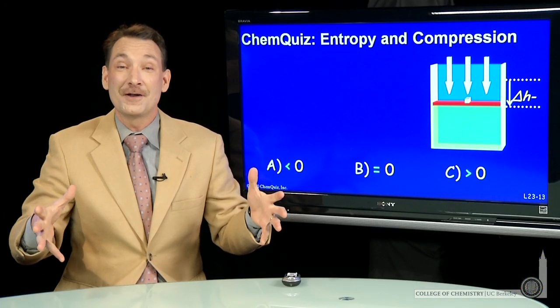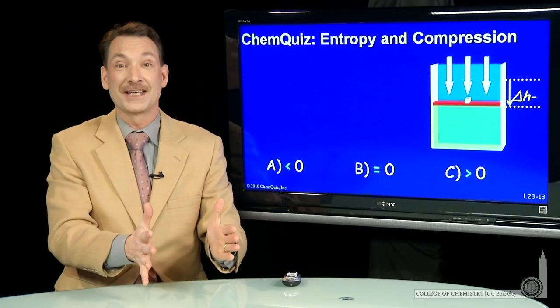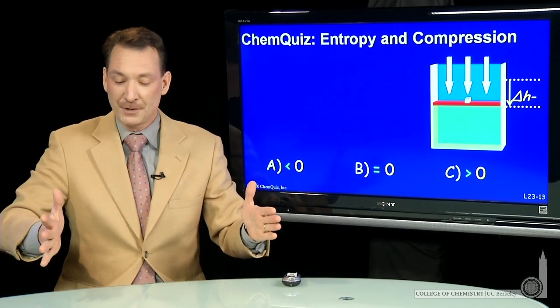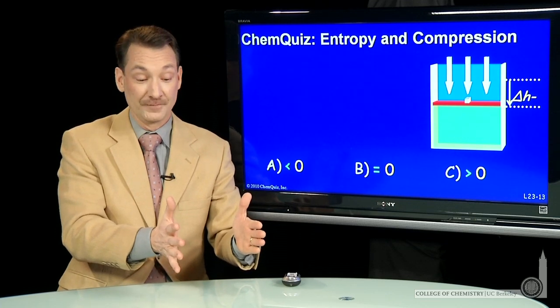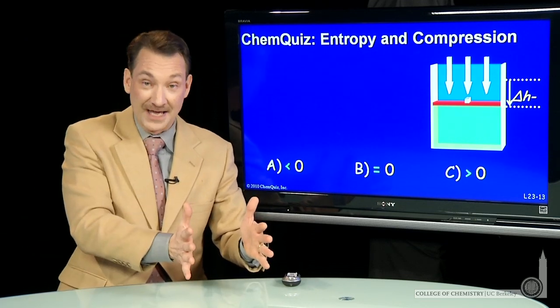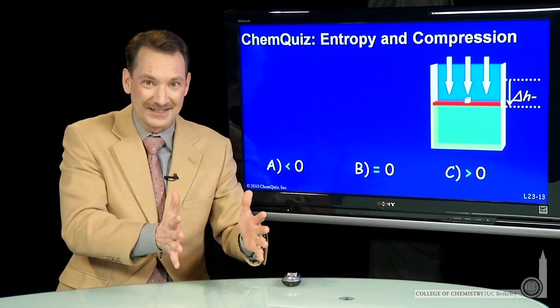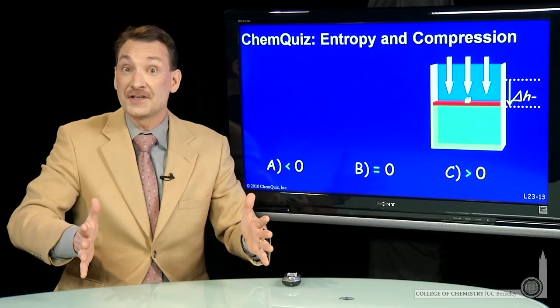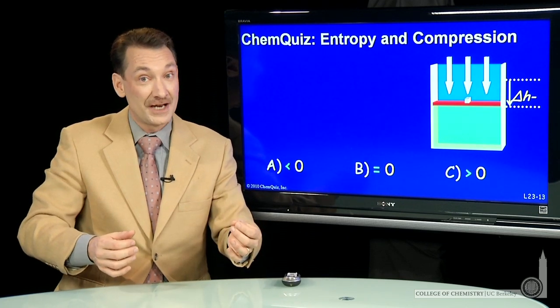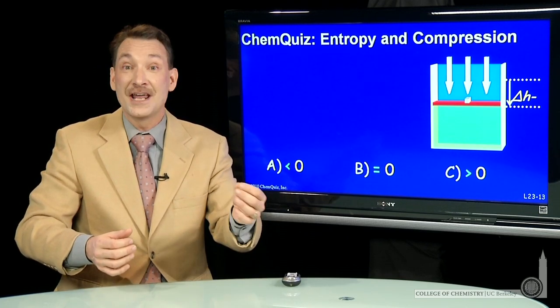We're talking about the change in entropy in the surroundings when I compress a gas. Well, when you compress a gas isothermally, you do work on the gas. So that would tend to raise the energy of the gas and change its temperature. But of course, this is isothermal, so the temperature can't change. The temperature changes, the energy changes.